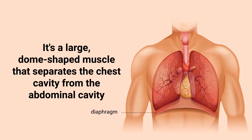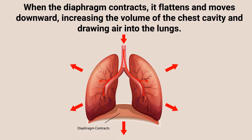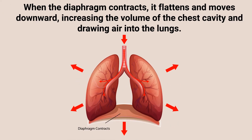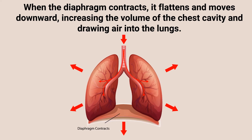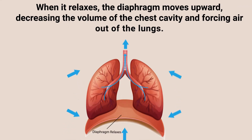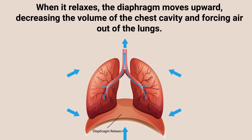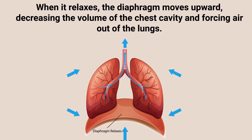When the diaphragm contracts, it flattens and moves downward, increasing the volume of the chest cavity and drawing air into the lungs. When it relaxes, the diaphragm moves upward, decreasing the volume of the chest cavity and forcing air out of the lungs.